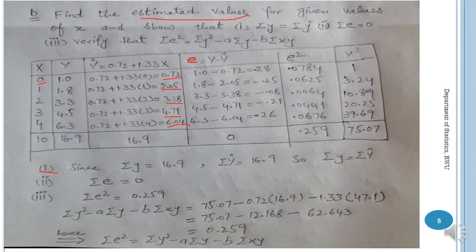Continuing the residuals: 4 − 4.71 = −0.71, and the next gives −0.26. When you total the residual column, some values are negative and some positive. Adding them all gives 0, verifying that Σe = 0. This confirms the second part.